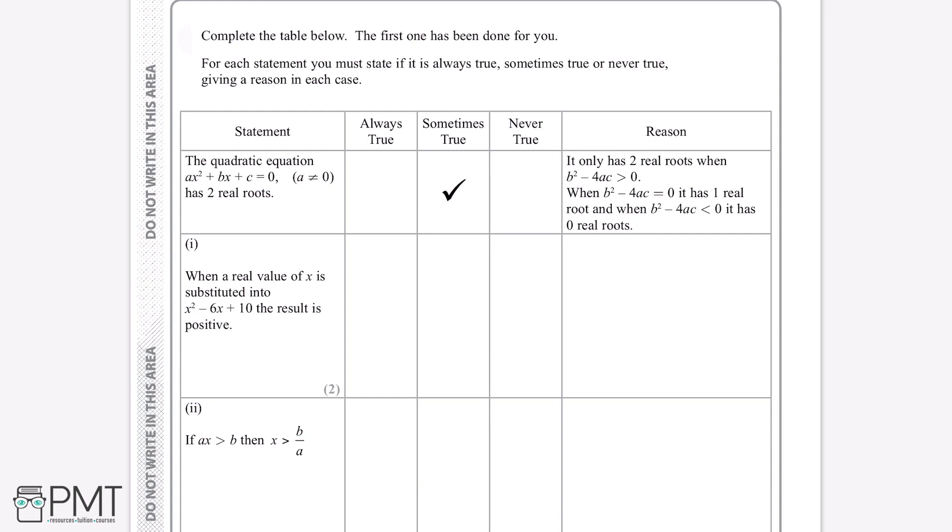When a real value of x is substituted into x squared minus 6x plus 10, the result is positive. So first of all, we can see that x squared minus 6x plus 10 can be factorised, and one way we can do this is using completing the square.